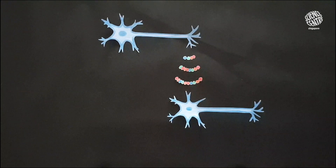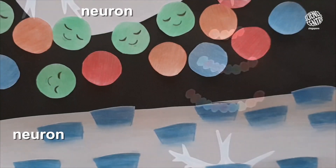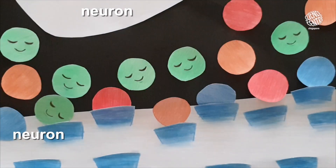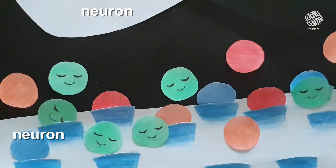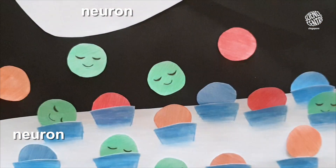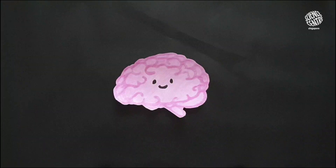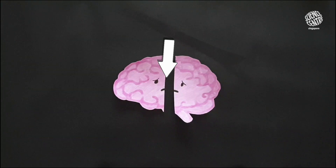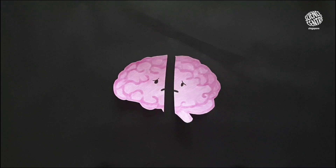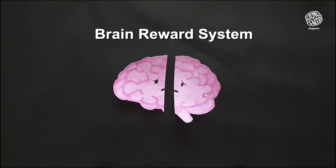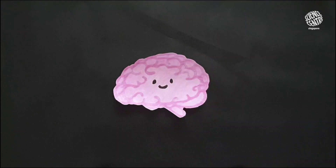Let's take a closer look at this gap. Once the neurotransmitter crosses the gap, it attaches itself on the receptor of the receiving neuron. In the middle of our brain, there's a system that controls our emotions and memories. Part of that system is called the brain reward system, which generates the feelings of pleasure.